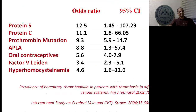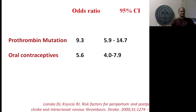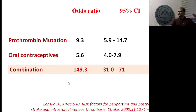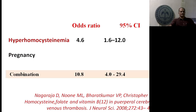Looking at odds ratios, protein S and C have an odds ratio of more than 10. The combination of risk factors is critical — for example, a lady with a prothrombin mutation has an odds of 9.3. If she starts taking oral contraceptives, which alone has an odds of 5.6, the combined odds multiplies — not adds — becoming almost 150. Similarly a pregnant lady with high homocysteine level sees the odds multiply. In some countries, genetic screening is now done before prescribing oral contraceptives for safety.